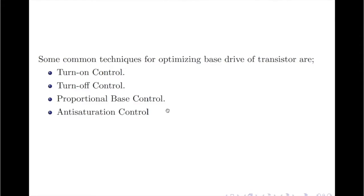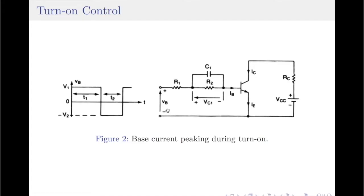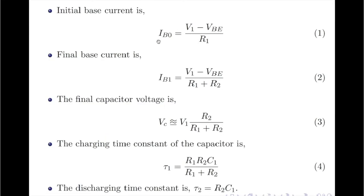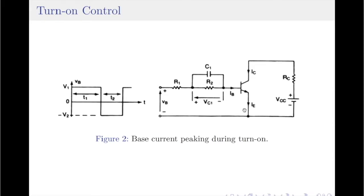Let us now discuss each one of them in much detail. I will start with the turn-on control. The circuit shown in figure 2 here provides base current peaking during both turn-on as well as turn-off. One interesting feature of this circuit is that it provides equal turn-on and turn-off times. Assume that the input voltage Vb is increased from 0 to V1 at time t equals 0. At this instant, the capacitor is shorted and therefore the base current flows through the capacitor. The base current at t equals 0 is limited only by resistor R1 because the capacitor shorts R2.